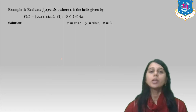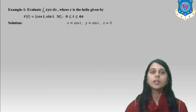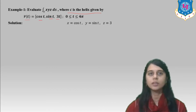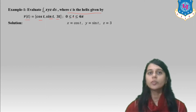Now one example: evaluate the integral over C of x·y·z ds, where C is a helix given by R-bar(t) = (cos t, sin t, 3t). It is a three-dimensional curve with x, y, and z components, and the value of t is 0 to 4π.